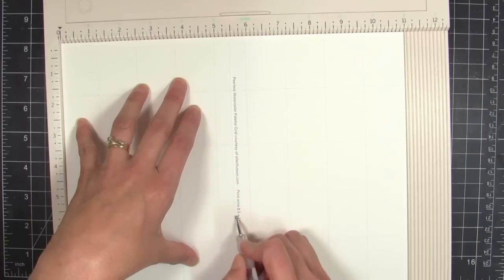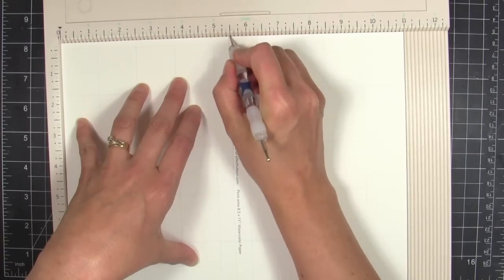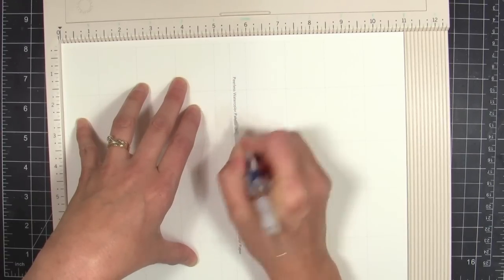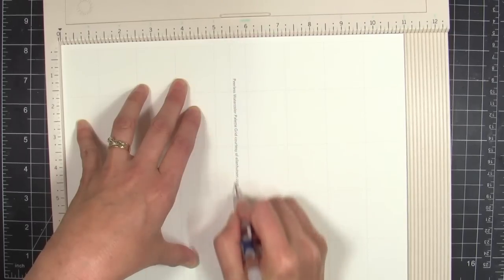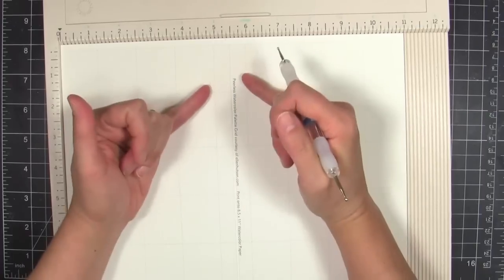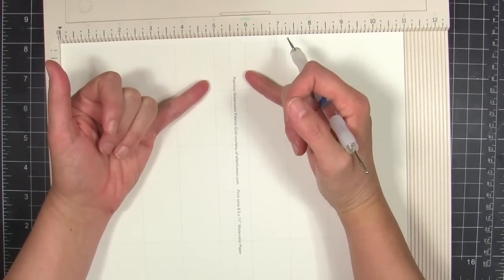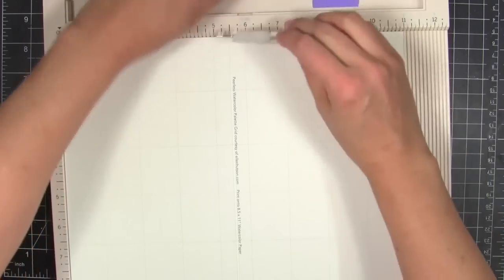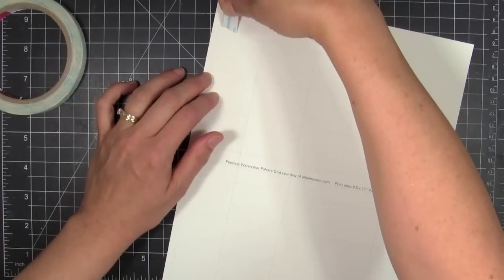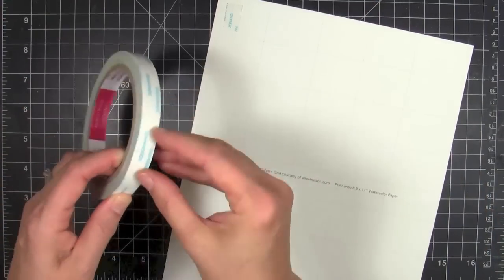I pre-cut a piece of 9 by 12 watercolor paper down to 8.5 by 11 and then I printed it on my printer and just fed it through the rear paper tray on my machine to help me avoid jamming. Now that we've got it all printed out and I've scored the center of it because I want to be able to fold it in half to make it even more portable so I can take it with me everywhere I go.